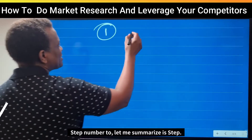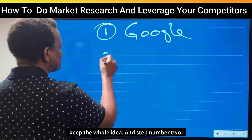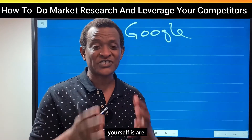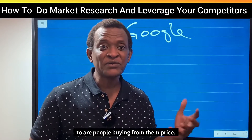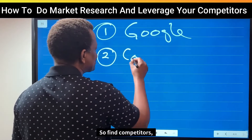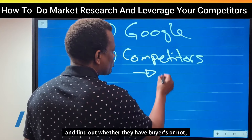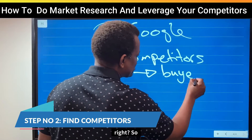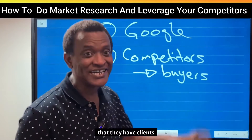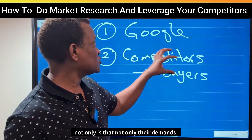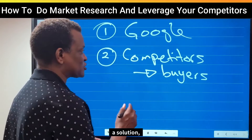Step number one is to Google the whole idea. Step number two: the second question you need to ask yourself is, are there competitors — are there businesses offering the same thing and are people buying from them? Find competitors who are already established and find out whether they have buyers. If you find competitors and find that they have clients, that is proof that not only is there demand, but also people are willing to pay money to find a solution.